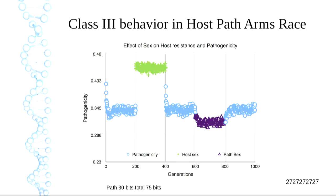Let's introduce recombination. The theory says recombination should help because we'll get wonderful new combinations of genes that will win and spread through the population — but that just does not happen. The pathogenicity goes right back up to where it began and only drops back down under asexual reproduction. We try it in the pathogen — the same thing happens but in the opposite direction. In both cases, sex made it worse.